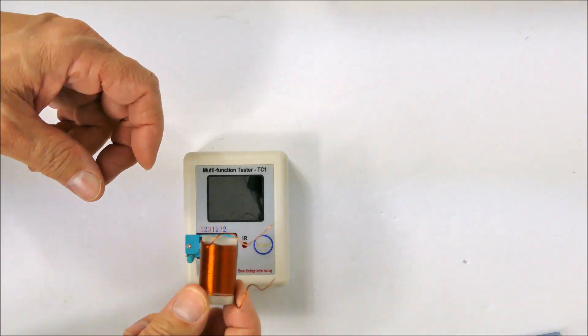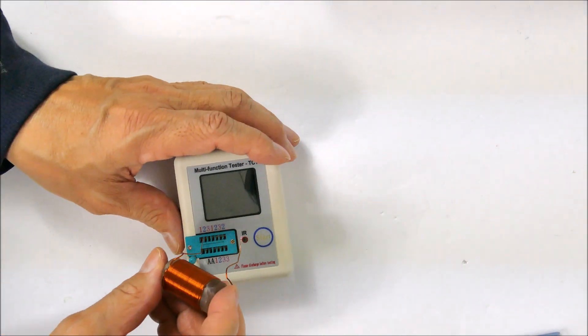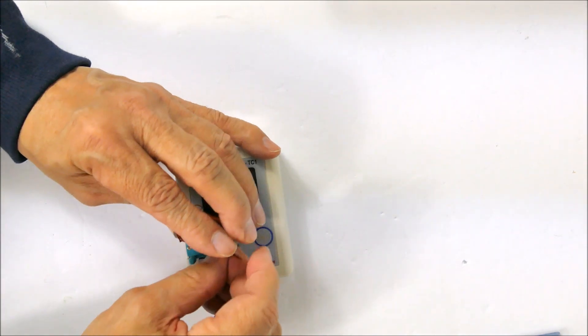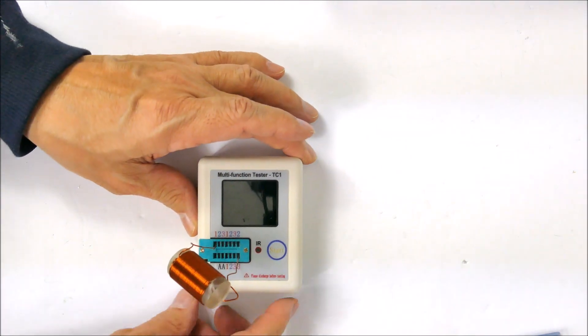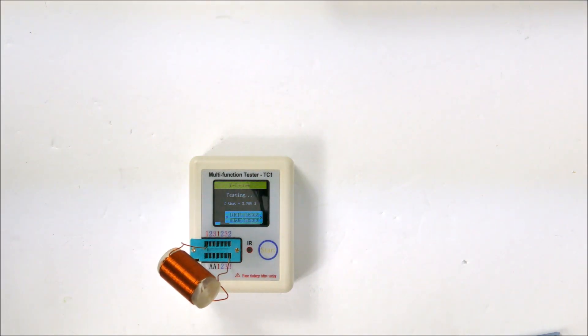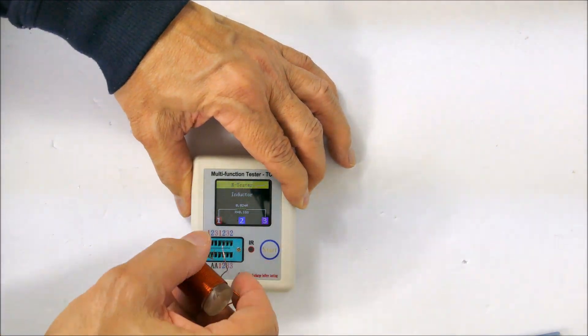How about inductors? Let's see what it does with one of these. There's no markings on this thing. It says it is an inductor, 0.02 millihenries. There's not really very many turns on here and it says the resistance is 0.18 ohms. So it gives you a lot of information about each component that it's testing.